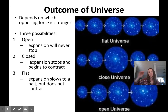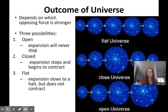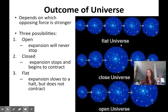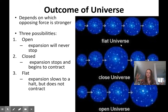When we talk about what our universe could do in the future, there are three outcomes depending on which of those two forces is stronger. An open universe would be if our universe just kept expanding forever — that's kind of what it's showing right now. A closed universe is when expansion stops, gravity takes over, and the universe begins to contract — to come back in on itself. A flat universe would be where the universe stops accelerating but continues expanding at a steady rate.